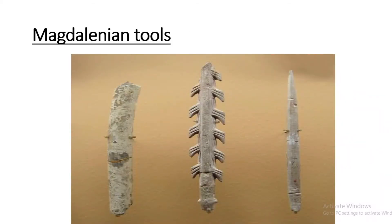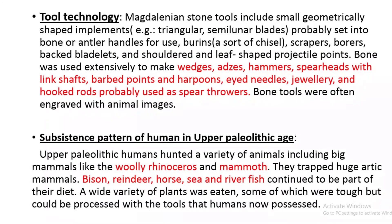This is an example of Magdalenian tools, most of which are more developed. These tools were used for carving the walls of caves. The stone tool technology of Magdalenian culture includes small geometrically shaped implements, probably set into bone or antler handles as composite tools.